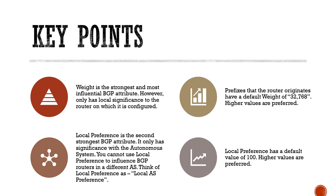As we just saw, weight can actually have effect beyond the local router — should another router have to traverse a router with a higher configured weight, we can see some unpredictable paths taken, so be aware of that. Prefixes the router originates have a default weight of 32,768, and higher values are preferred. Local preference is the second strongest BGP attribute with significance only within the local autonomous system — think of it as local AS preference. It has a default value of 100, and higher values are preferred, just like weight.